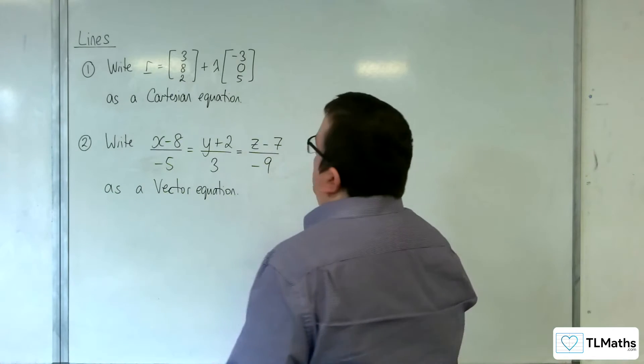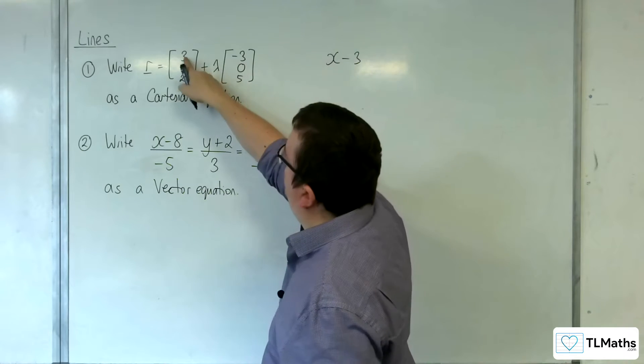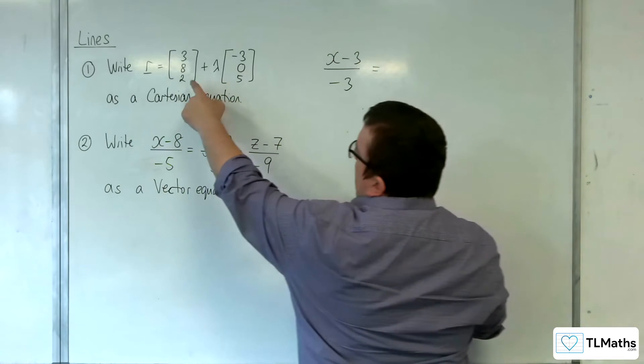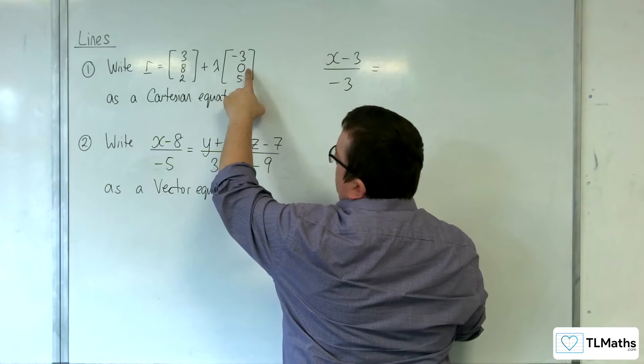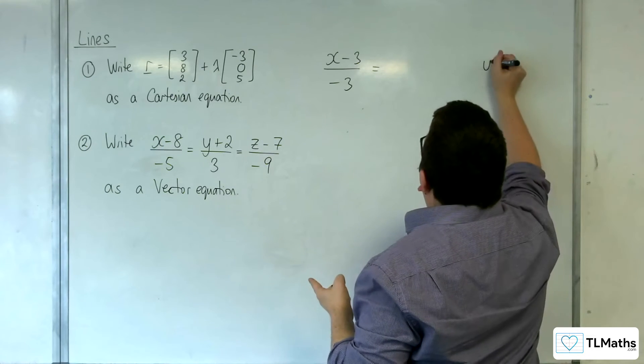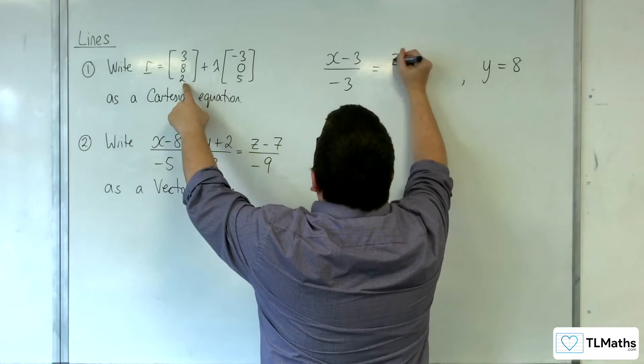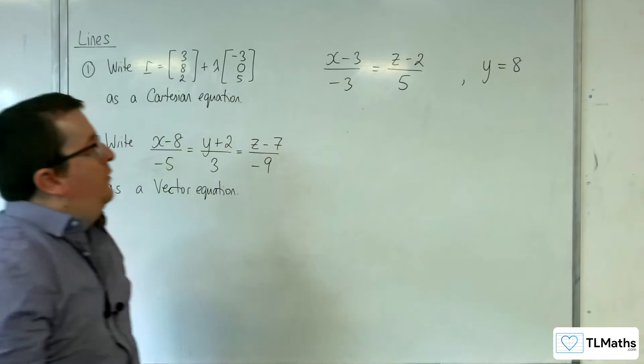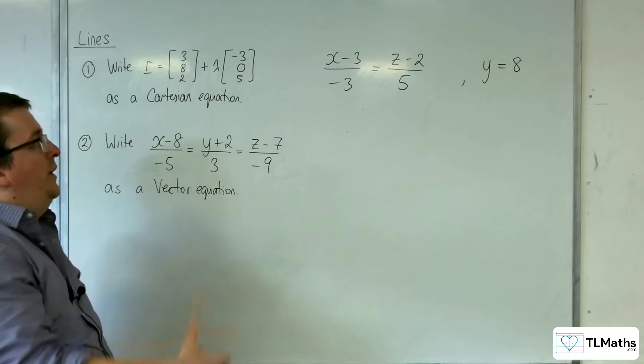Now, you can dive straight in to writing this as x take away 3 over minus 3. But we can't then write y take away 8 over 0. Okay, so we can't write that bit but we can write y is equal to 8 on the side. And then z take away 2 over 5. Okay, so you can go straight in to that form writing it directly from the vector form into Cartesian form.